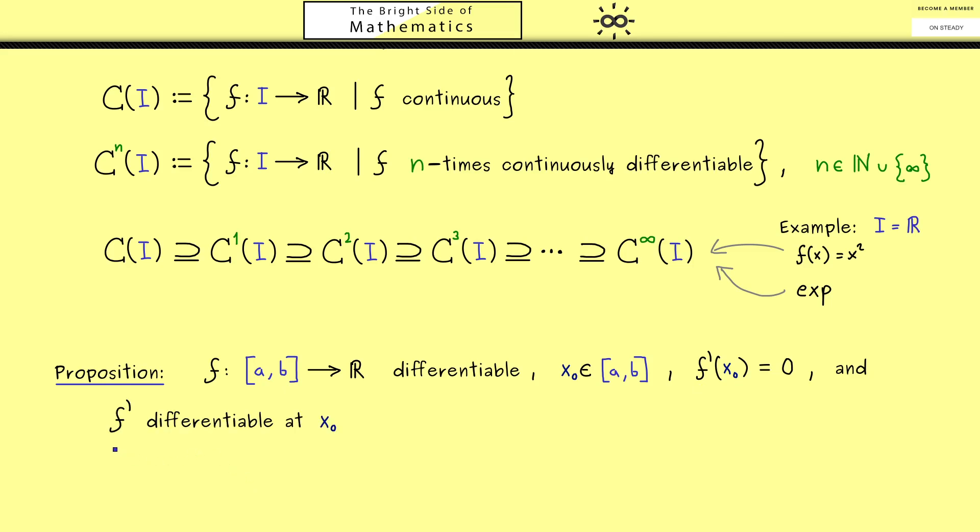So we assume that f' is at least differentiable at one point which should be x0. In other words this means that f'' of x0 exists. Now we have two interesting cases depending on the sign f'' has at x0. If it's positive then this is sufficient for having a local minimum. Hence this implies that the original function f has a local minimum at the point x0. Now probably this is something you might have already used in your mathematical career.